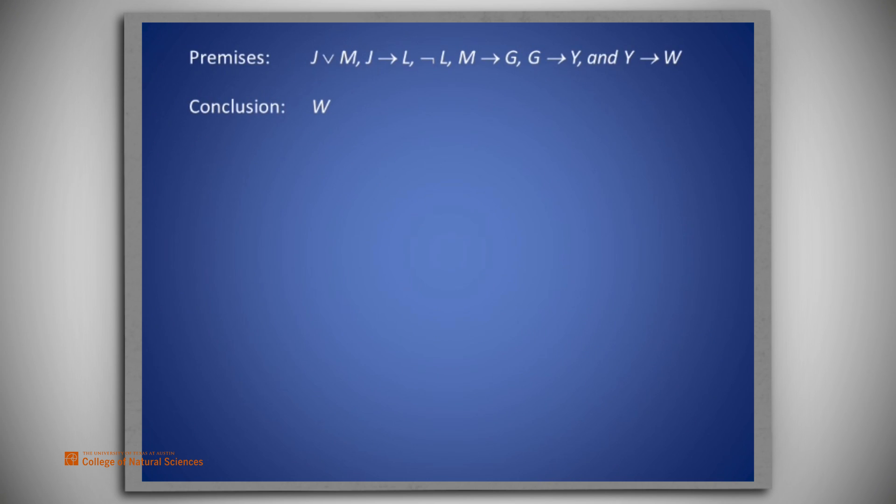The premises of this problem are J or M, J implies L, not L, M implies G, G implies Y, and Y implies W. The conclusion we seek is W.